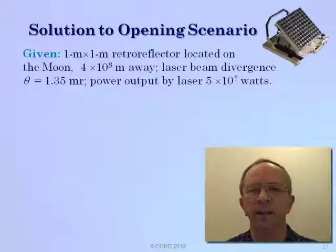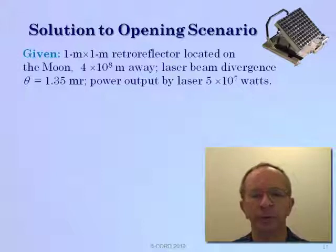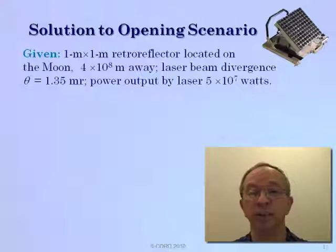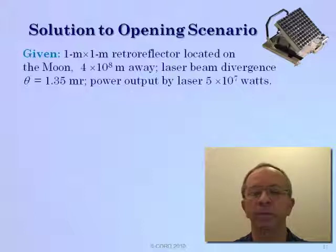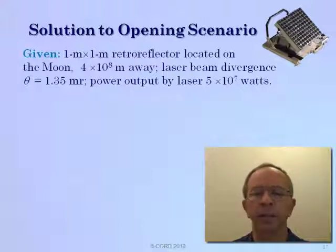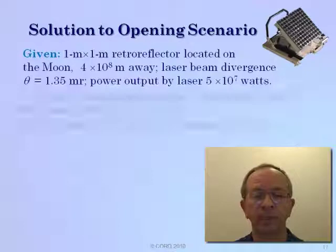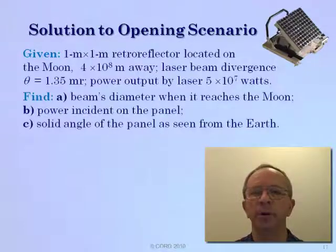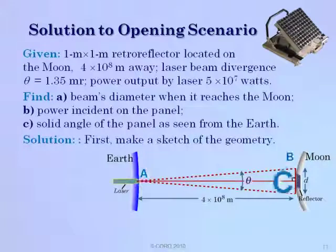Now let's return to our opening scenario with the laser and the retroreflector on the moon — four times ten to the eighth meters away, which is four hundred million meters. The laser beam divergence theta equals one point three five milliradians, and the laser output is five times ten to the seventh watts, or fifty megawatts. Let's define the beam diameter when it reaches the moon. Making a sketch, we have the Earth and the moon with the beam spreading at angle theta. We'll label coordinates A, B, C, and D.